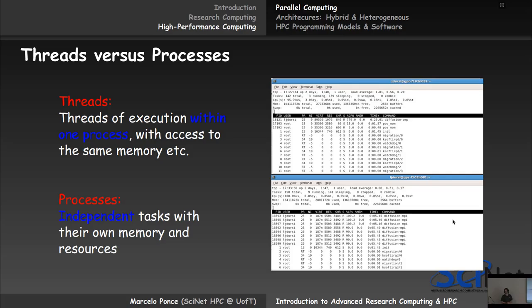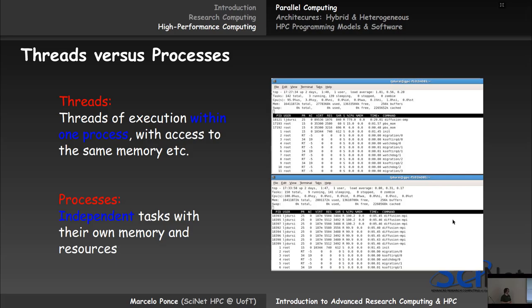Threads versus processes is mainly differentiated when you have a multicore machine with many CPUs. Even on one CPU, different processes are independent programs running on the same CPU or not, while threads run only on one CPU and are different instances of the same program. Examples using software: OpenMP produces threads, and MPI produces different processes that communicate information between them.